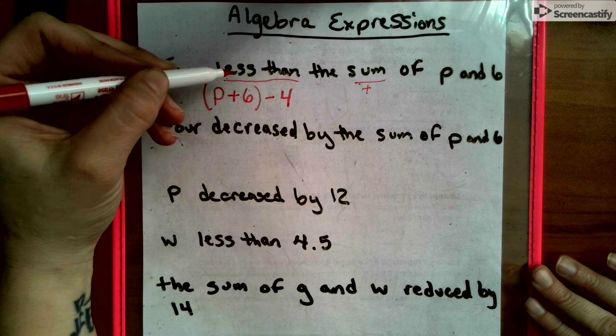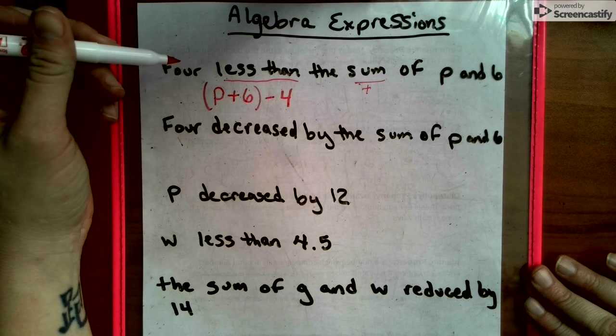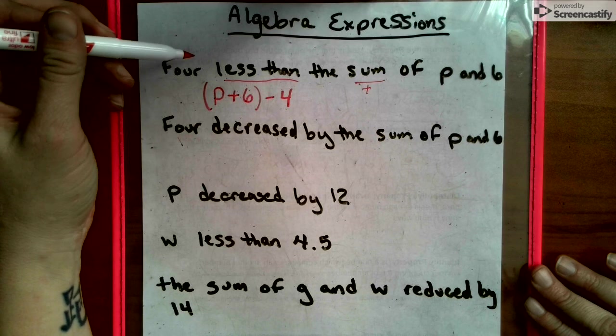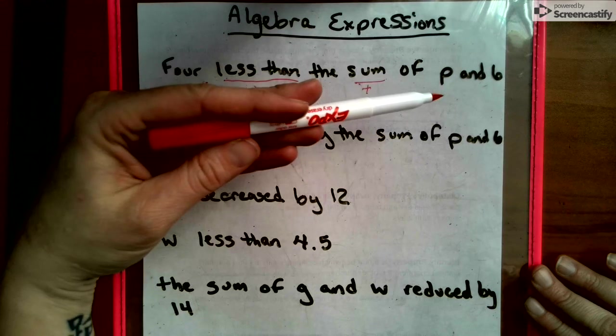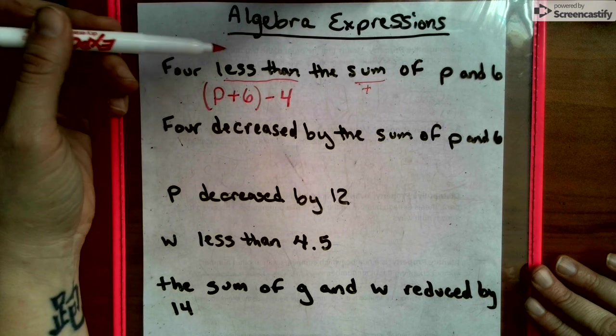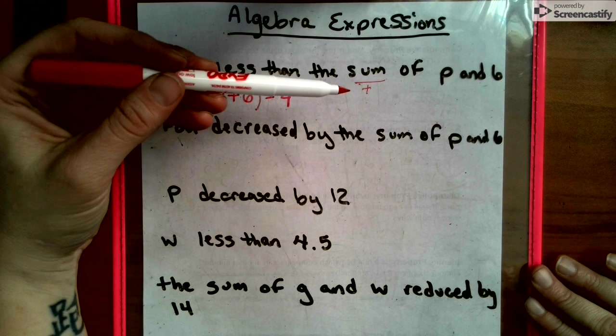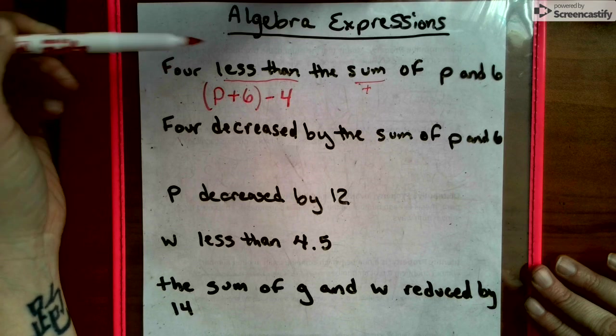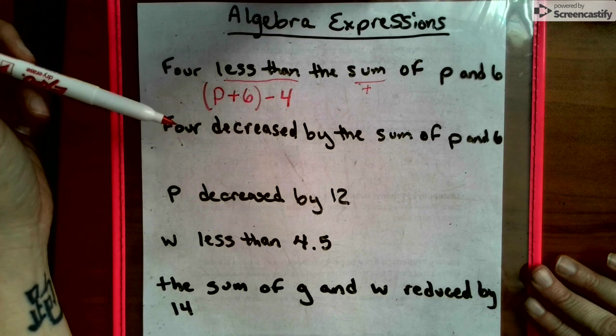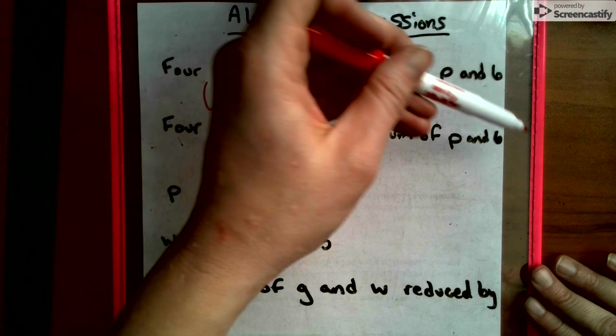So the word less than means that normally if we were to translate this, we would have 4 minus P plus 6. But because 4 has to be less than the sum of this, we have to have the sum first before we can take 4 less than it. So this would be parentheses P plus 6, then minus 4.